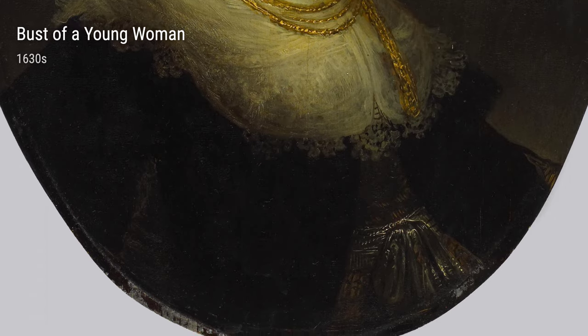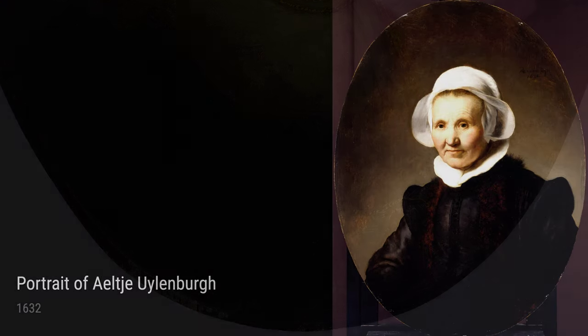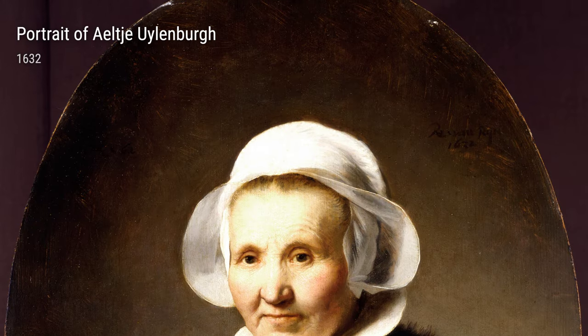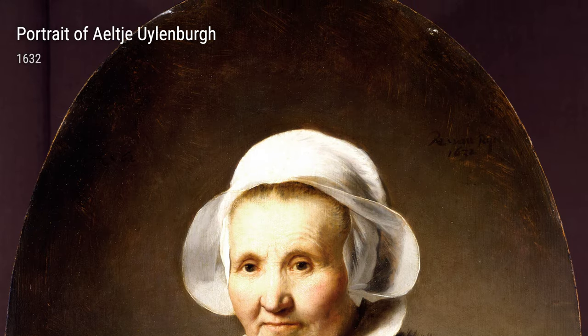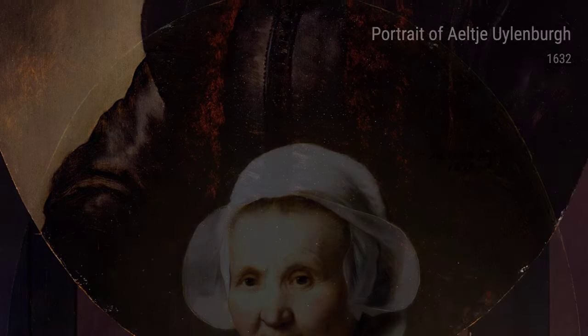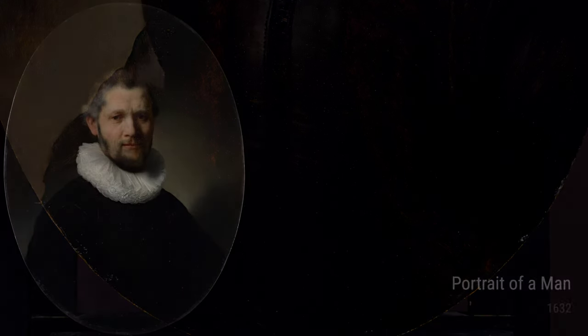Among Rembrandt's other notable works are Portrait of Martin Lüten and Portrait of Yltje Ullenberg, both painted in 1632. These intimate and captivating portraits show Rembrandt's ability to create a connection between the viewer and the subject, making us feel as if we are truly meeting these individuals.